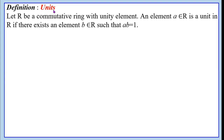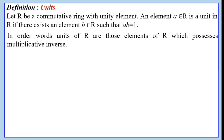Definition of Units. Let capital R be a commutative ring with unity element. An element A belonging to R is a unit in capital R if there exists an element B belonging to R such that A times B is equal to 1. In other words, units of capital R are those elements of capital R which possess a multiplicative inverse.